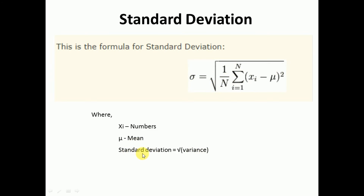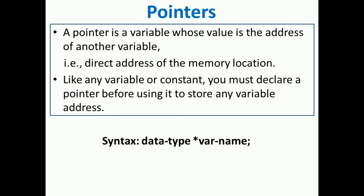Standard deviation is equal to the square root of variance. In this way, we can calculate the standard deviation. After this, we will discuss some basics of pointers.